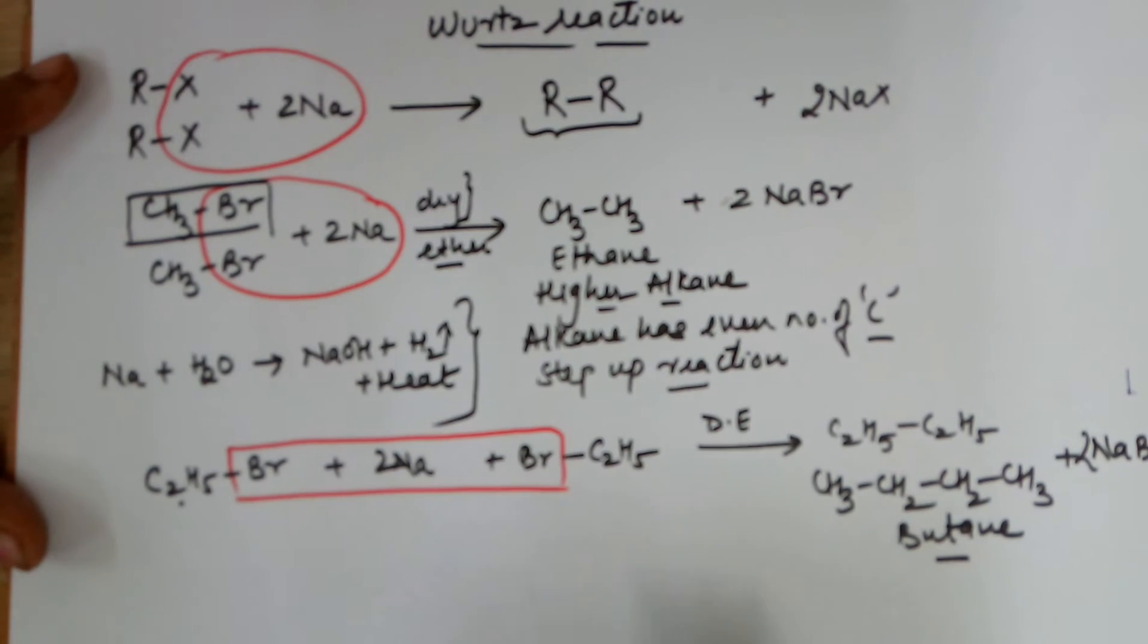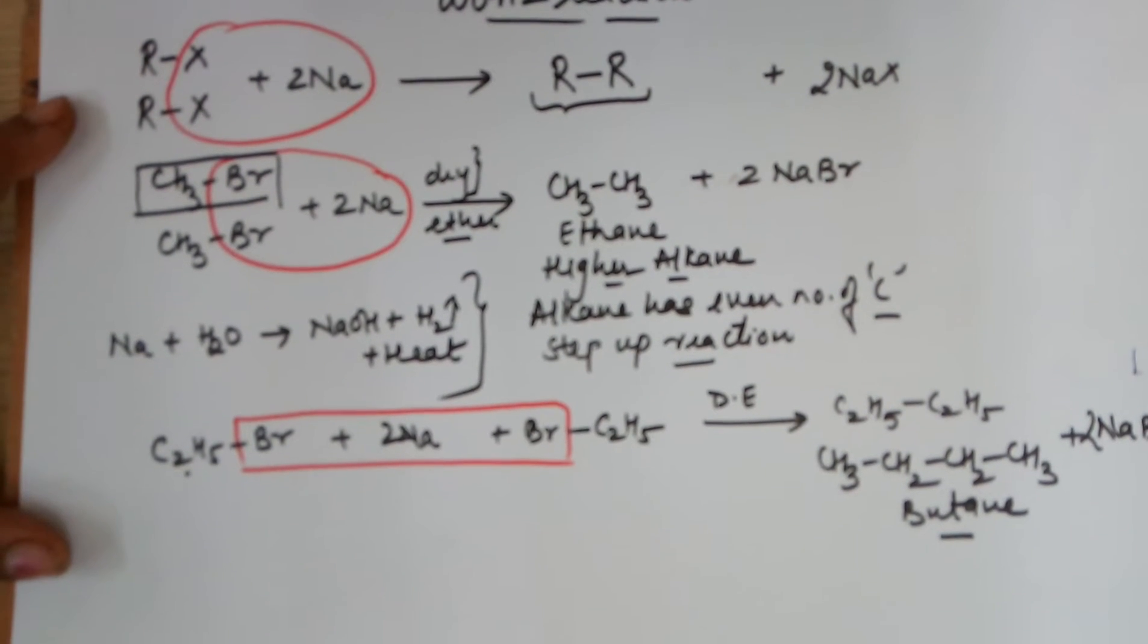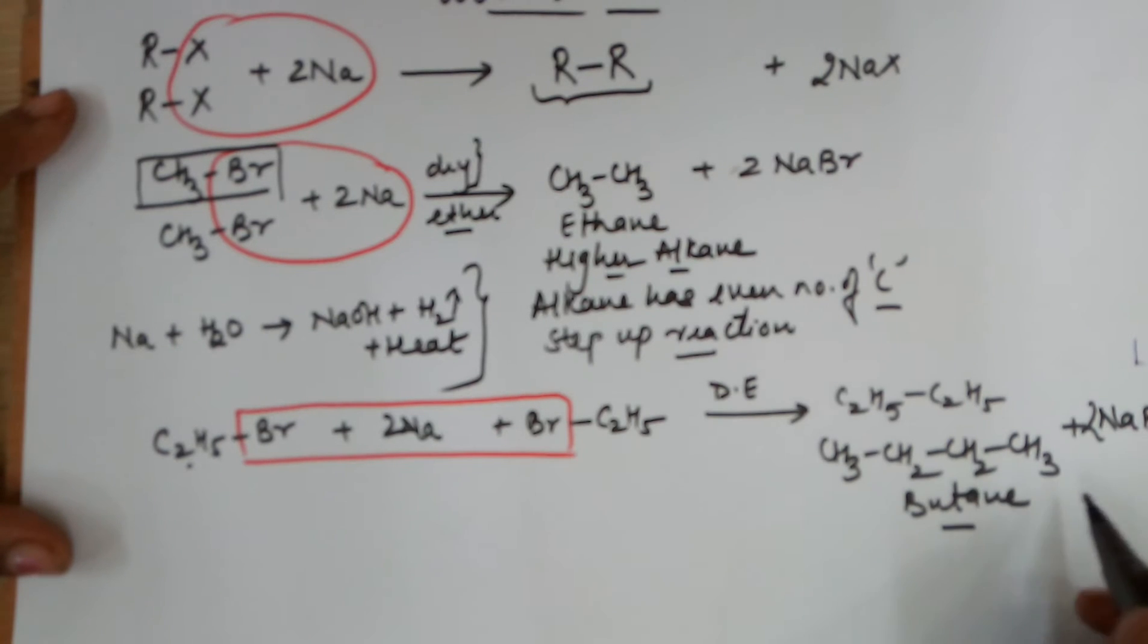Ethyl bromide has two carbons, your butane has four carbons. Hence again you are increasing the number of carbons in the product. Therefore it is again a step-up reaction and the alkane formed has even number of carbons.